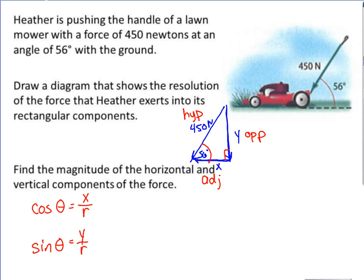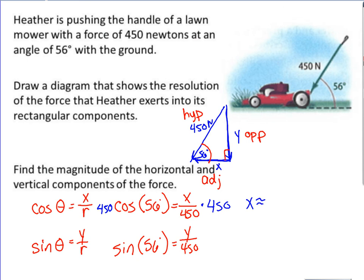So our x component is our adjacent, so we know that the cosine of 56 equals x over your resultant vector, and the sine of 56 degrees equals y over your resultant vector. When we calculate this, it's x divided by 450, so we multiply both sides by 450, and we're going to get an x value of approximately 252 newtons.